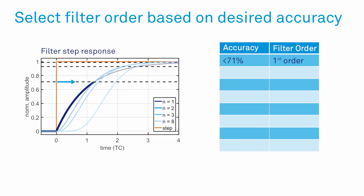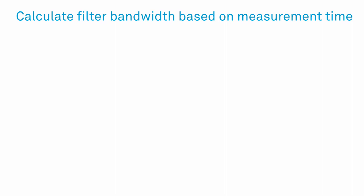To measure the new value with an accuracy of up to 71%, the best choice to achieve maximum signal-to-noise ratio is a first order filter. Up to 95% a second order and to 99% a third order and so on.